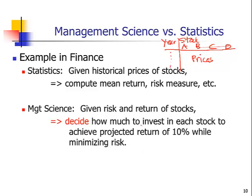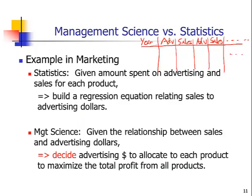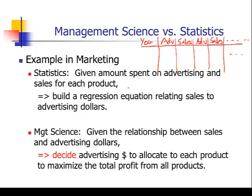So in management science there's some kind of objective and some kind of constraint, and given those, we make a decision. As another example, in marketing, you might use statistics to build a regression equation relating sales to advertising dollars, because the more money you spend on advertising, the higher the sales should be. Then in management science, given those regression equations, we use them in our model to decide how much money to allocate in advertising to each product, given the total advertising budget.